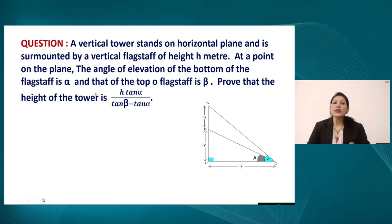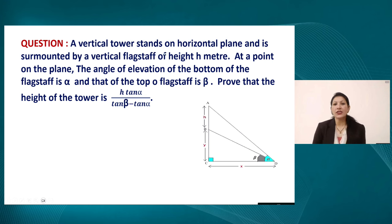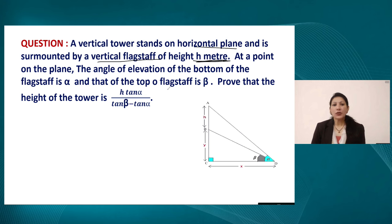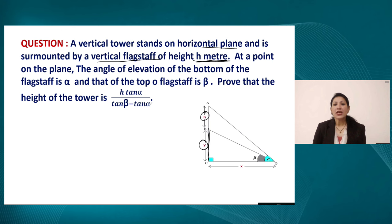The next question is a higher order thinking skill based question. A vertical tower stands on a horizontal plane and is surmounted by a vertical flag staff of height h meters. The tower height is not given, so we suppose it to be y units. The flag staff AB has height h meters while tower BC is y meters.